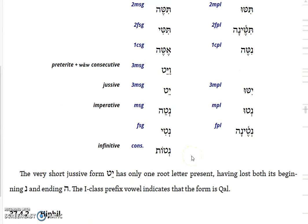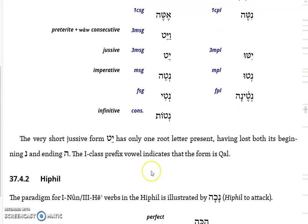The imperative form is about what you'd expect with nate, and the infinitive construct follows the third-hey type with nate. But the most tricky thing about this form is the very short jussive, yitten, which has only one of the three-letter root consonants that actually shows up.